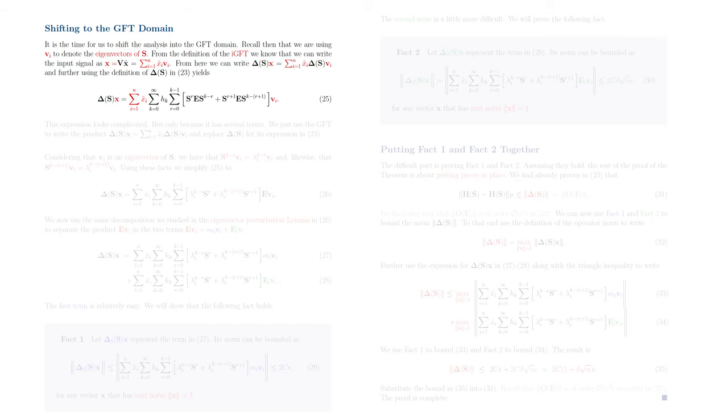Using this expression for X, we can write the product delta of S times X as a summation of products of the form delta of S times Vi, each of them scaled by their respective graph Fourier transform coefficient Xi tilde.